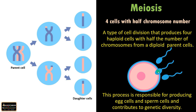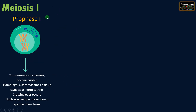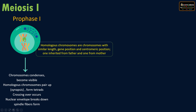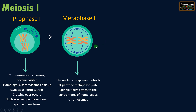There are two divisions in meiosis. The first division is meiosis one. The first stage is prophase one of meiosis one. During this stage, chromosomes condense and become visible. Homologous chromosomes pair up — these are chromosomes with similar length, gene position, and centromeric position, one from the father and one from the mother. This forms tetrads, made up of four chromatids, which is why they are called tetrads. Crossing over, or exchange of segments between homologous chromosomes, takes place during prophase one, contributing to genetic diversity. The nuclear envelope breaks down and spindle fibers form.